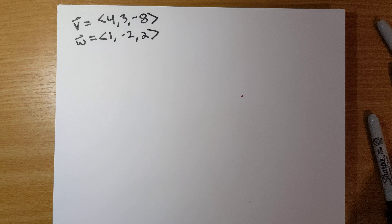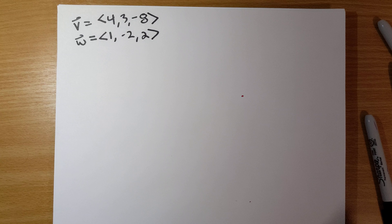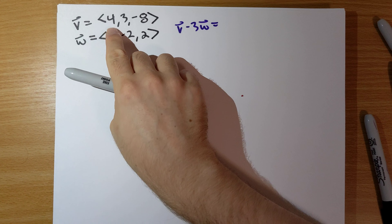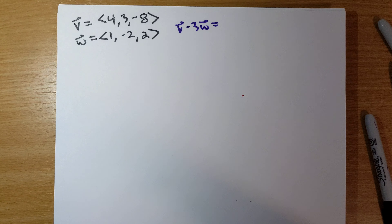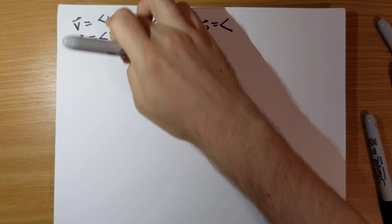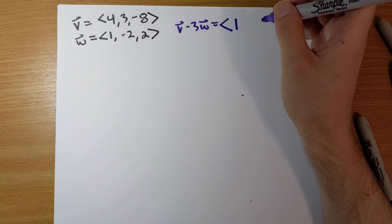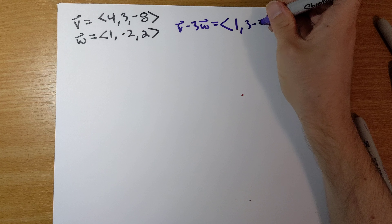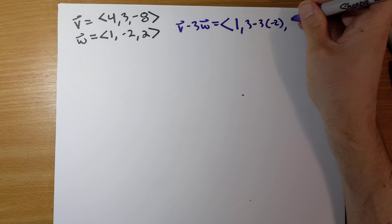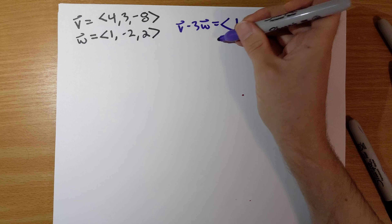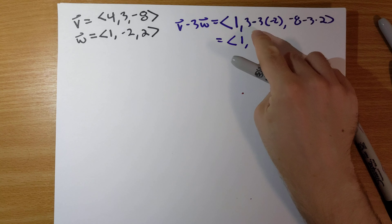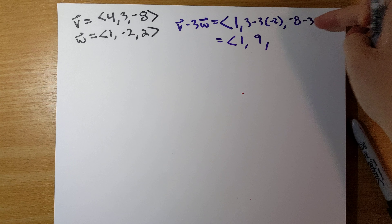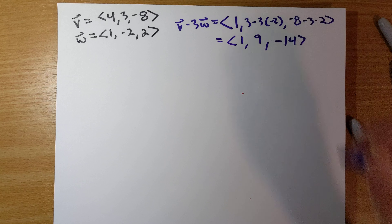We're asked to find a unit vector in the same direction as V minus 3W. To compute V minus 3W, we subtract 3 times the corresponding component of W from each component of V: 4 minus 3 times 1 is 1, 3 minus 3 times negative 2 is 9, and negative 8 minus 3 times 2 is negative 14.